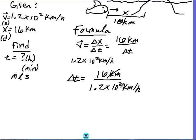So my delta T or change in time is going to equal to 16 kilometers divided by my 1.2 times 10 to the second kilometers per hour. When I divide, kilometers is going to cancel out. Time-wise, I'll be left with 0.13 hours.